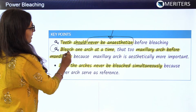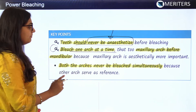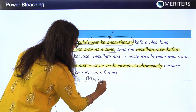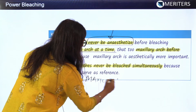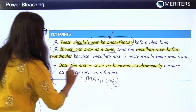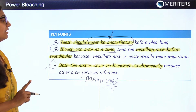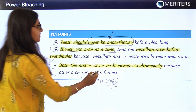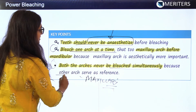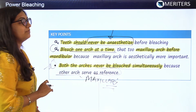You should bleach one arch at a time. The maxillary arch is the first one to get bleached because of aesthetic preferences. An important third point: both arches should never be bleached simultaneously, because one arch serves as a reference while the bleaching technique is being used.